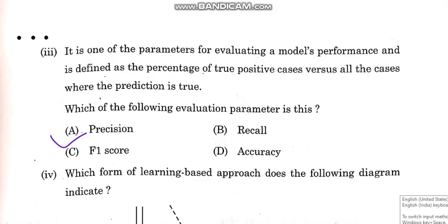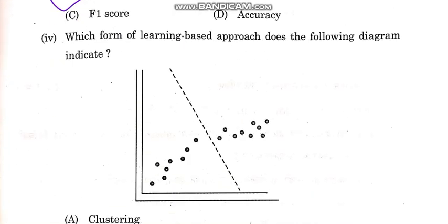This is one of the parameters for evaluating model performance. If you find the percentage of true positive cases among all cases where the verification is true, the correct answer is A option — this refers to recall.